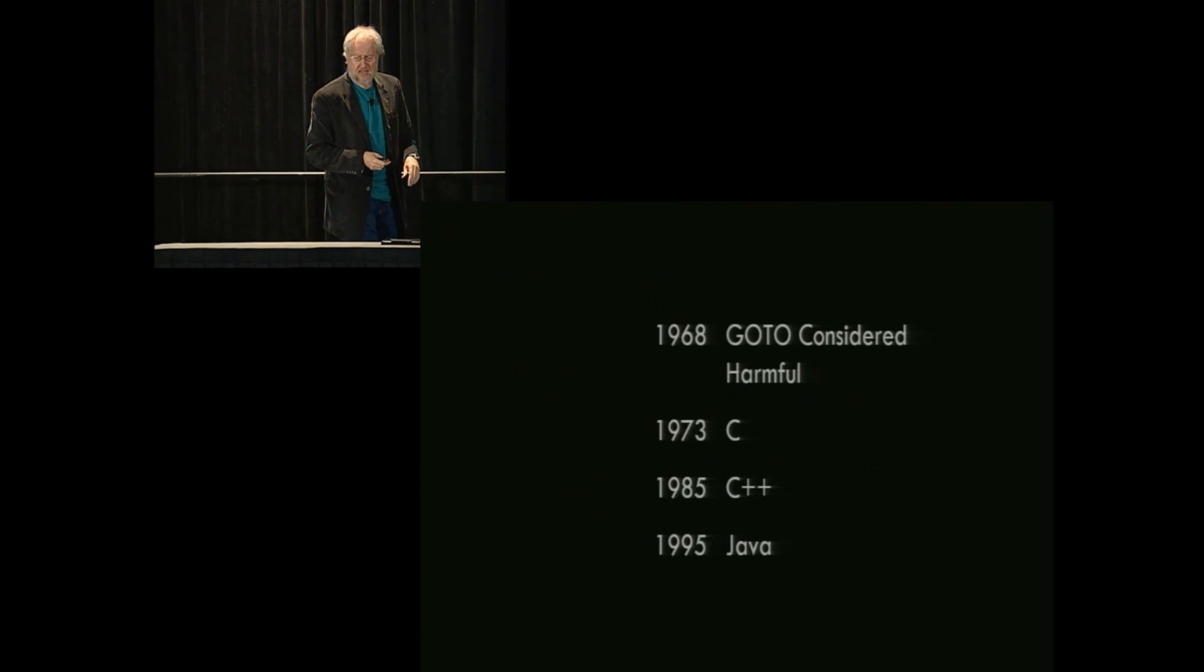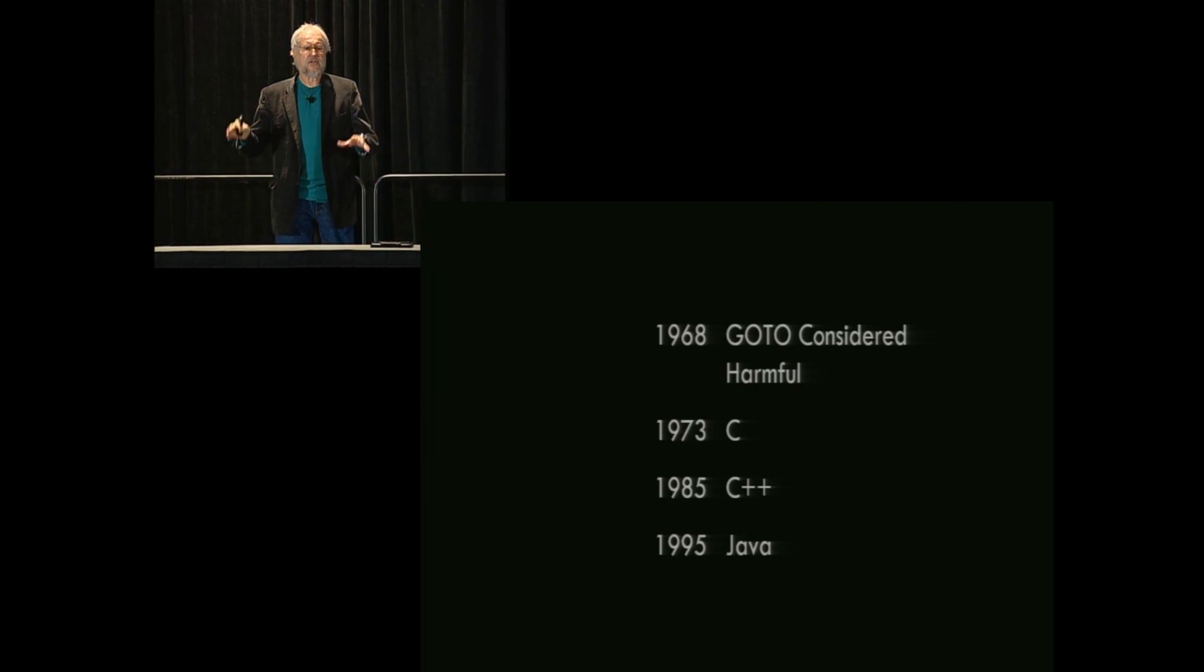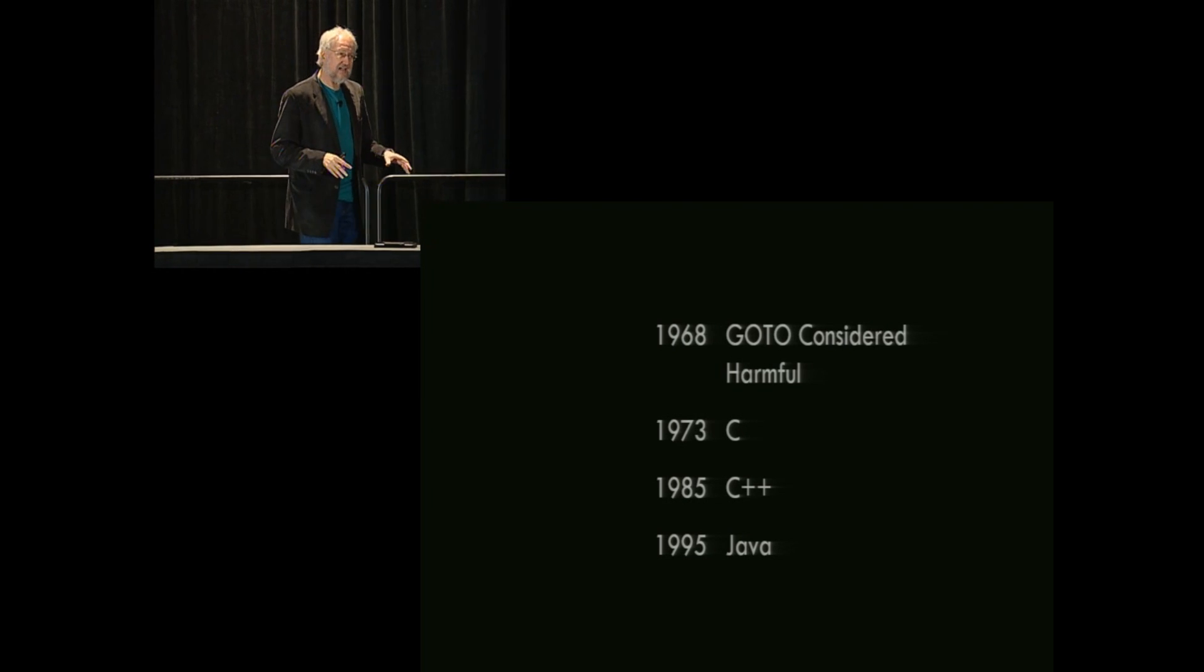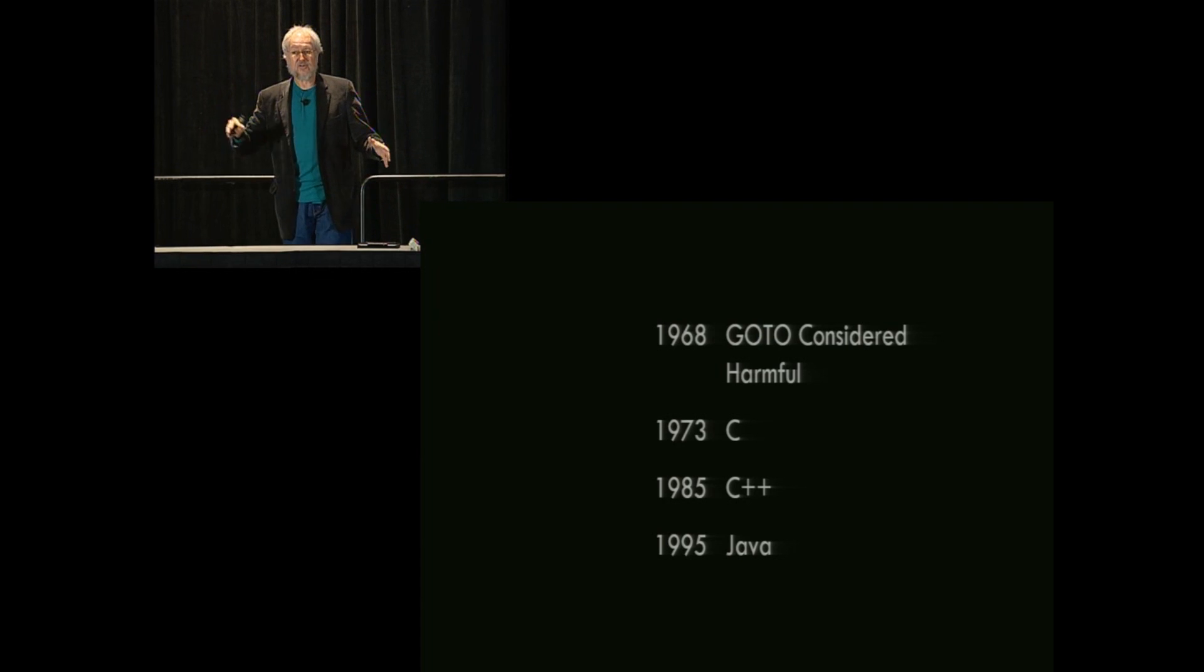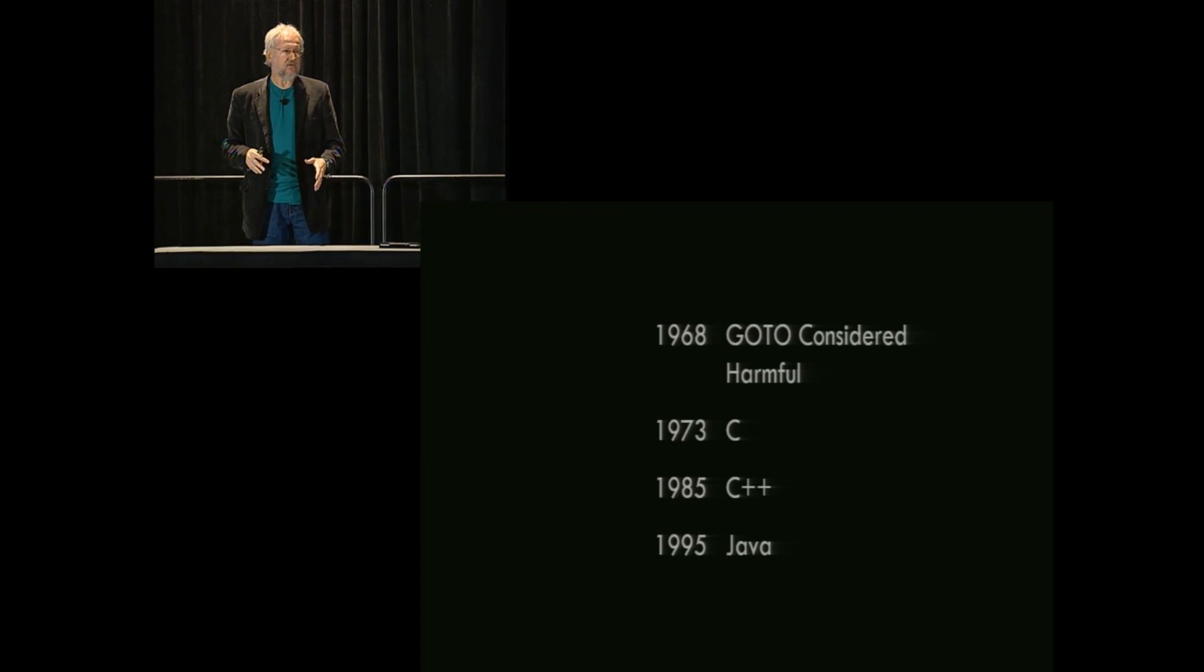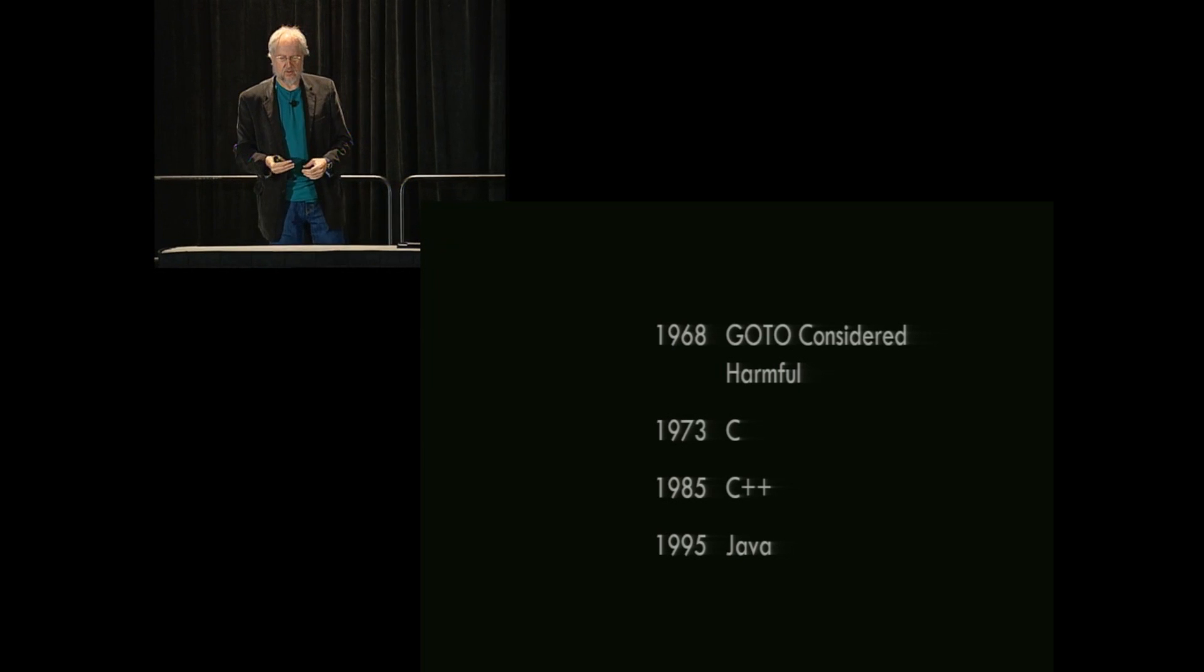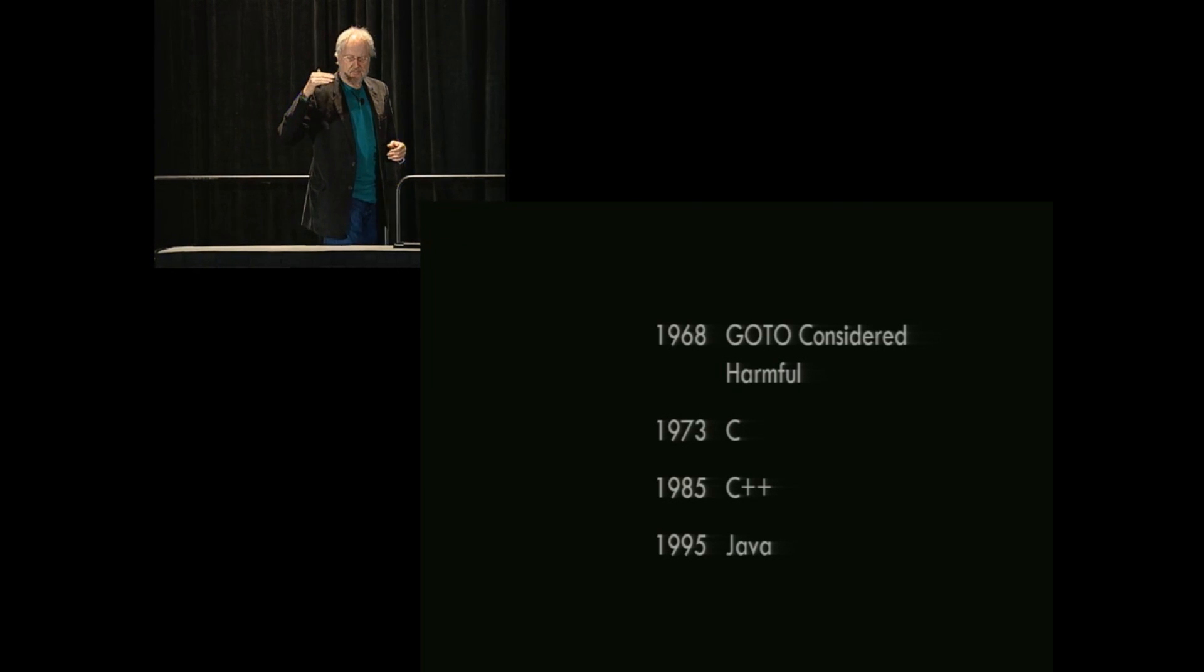So let's look at the chronology. So Dijkstra publishes his letter in 1968. Now, he doesn't claim originality for the idea that go-to should be eliminated. Someone suggested the idea to him in 1959. And at that time, he completely missed it. Didn't understand what the guy was talking about. Didn't make any sense. Nine years later, he understood the wisdom of the statement and said, okay. And he became a major advocate for it. Just after Dijkstra publishes his letter, Dennis Ritchie begins work on C.